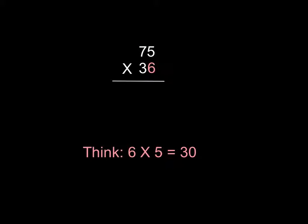Which means we're going to start by multiplying the six times the five, and you should just be thinking in your head, six times five, that equals thirty.